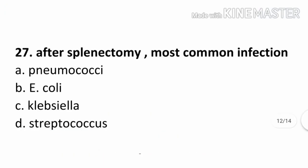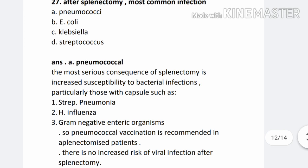Question number 27. After splenectomy, most common infection: Option A. Pneumococci, Option B. E. coli, Option C. Klebsiella, Option D. Streptococcus. The correct answer is Option A. Pneumococcal. The most serious consequence of splenectomy is increased susceptibility to bacterial infection, particularly those with capsules such as Streptococcus pneumoniae, H. influenzae, and gram-negative enteric organisms. Pneumococcal vaccination is recommended in splenectomized patients. There is no increased risk of viral infection after splenectomy.